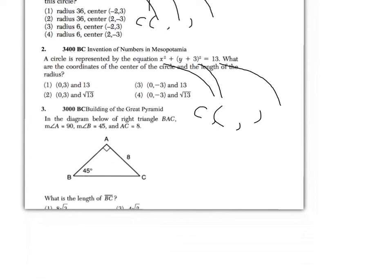For question three, this one is setting up to be a question with the Pythagorean Theorem. It says it's 45 degrees here, so that must mean that this is 45 degrees as well. That gives you a triangle that's an isosceles triangle with two base angles the same. So this will tell you that this side here is also 8. You're looking for how long the base of this isosceles triangle is, and a² + b² = c² will get you going in the right direction. At the end, the choices are written in simplest radical form, and you're going to have to match up your answer to one of those answers.